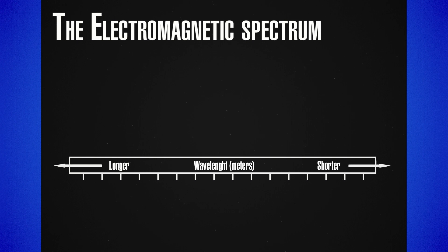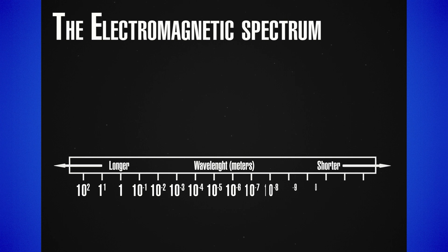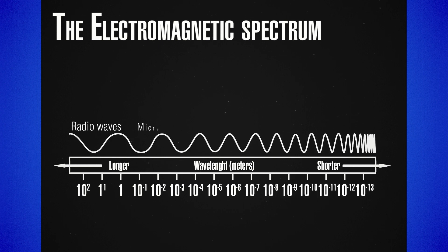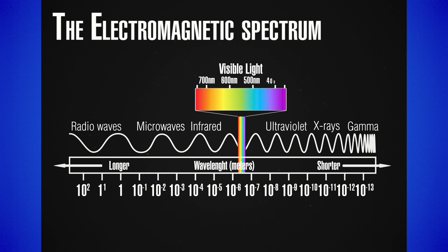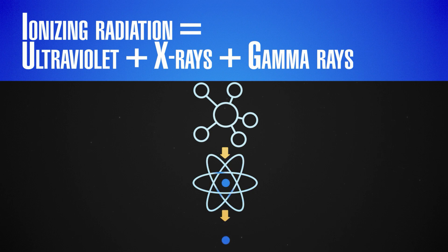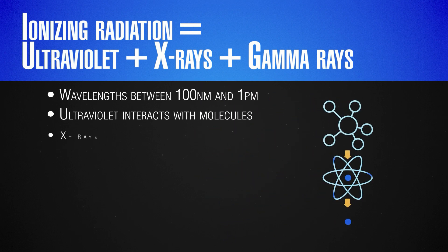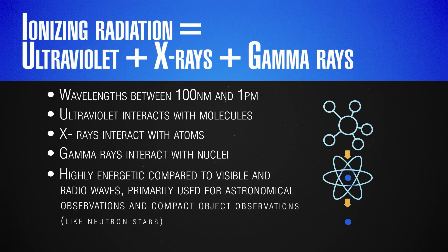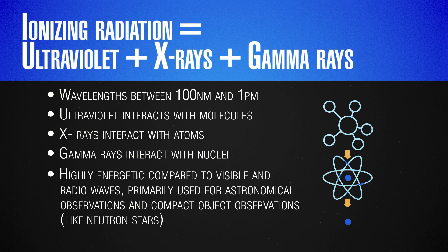If we look on the right part of the spectrum, we will find there the ultraviolet rays, the X-rays and the gamma rays. They form the so-called ionizing radiation. That part includes wavelengths between 100 nm and 1 picometer. The ultraviolet rays interact with molecules, the X-rays interact with atoms and the gamma rays interact directly with atomic nuclei. They are highly energetic particles, usually produced by violent cosmic events. Many modern space telescopes use these wavelengths for observation of compact objects such as neutron stars or black holes.